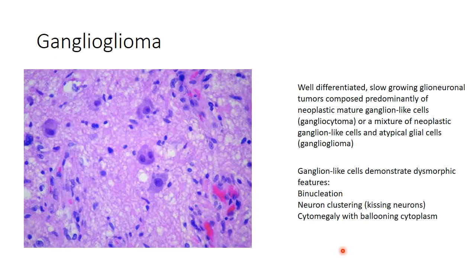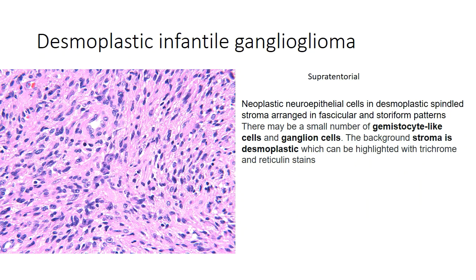Ganglioglioma is a well-differentiated, slow-growing glioneuronal tumor composed of ganglion-like cells and atypical glial cells. The ganglion-like cells demonstrate dysmorphic features like binucleation, nuclear clustering, and cytomegaly with ballooning of the cytoplasm. Desmoplastic infantile ganglioglioma is a supratentorial tumor where neoplastic neuroepithelial cells are seen in a characteristic desmoplastic spindled stroma, arranged in fascicular and storiform pattern, with small numbers of gemistocyte-like cells and ganglion-like cells. The background stroma is variably desmoplastic, highlighted by trichrome or reticulin stain.